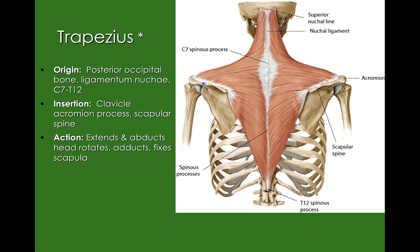Our first muscle, really big muscle on our backs, is our trapezius. We can see that this has a giant origin: our posterior occipital bone, which helps draw back that head, the ligamentum nuchae or the nuchal ligament, and then C7 through T12 — the spinous processes of C7 down through T12. The insertions come over to our scapular spine and around to our clavicle and the acromion process. These are going to help extend and abduct our head, rotate, adduct, and even fix our scapula.